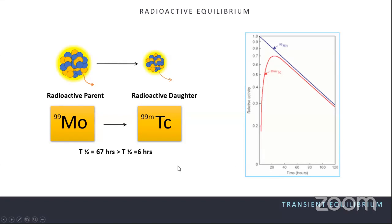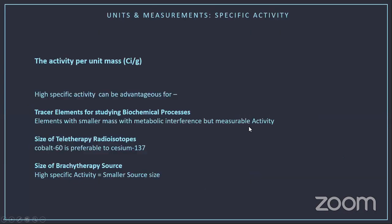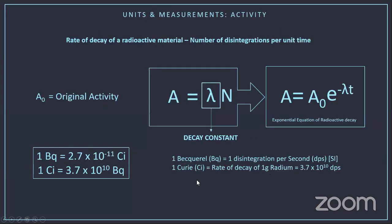Question: Is the rate of disintegration for radium constant? Yes — activity is constant for any given radioactive material at a given time. The curie unit is defined as the rate of decay of one gram of radium, which is a fixed activity value.